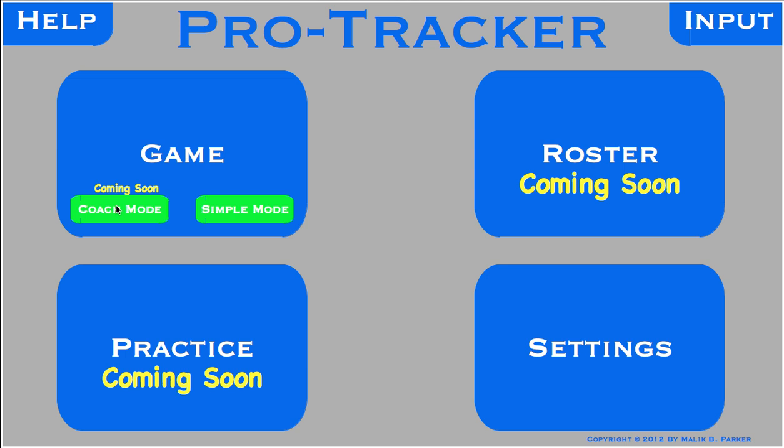We have three coming soon buttons and pages. We're going to talk about why they're coming soon and what their purpose is. The roster is where we will keep track of stats and things of the players. Under the team, we will have the players' names, their jersey numbers, their height, and such information about them that you could find on the average sports website.